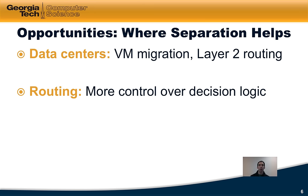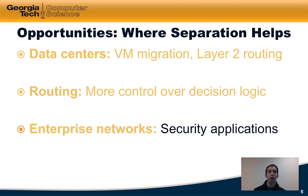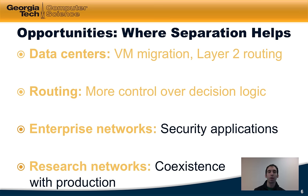There are various opportunities that we'll look at where separation actually helps. In this particular lecture, I will provide a brief overview of where separating the data and control plane can help in data centers and in routing. In a subsequent lecture, we will also talk about where this control and data plane separation can help make certain applications in enterprise networks easier to manage. We'll also talk about how the separation can help in research networks by allowing research networks to coexist with production networks on the same physical infrastructure.